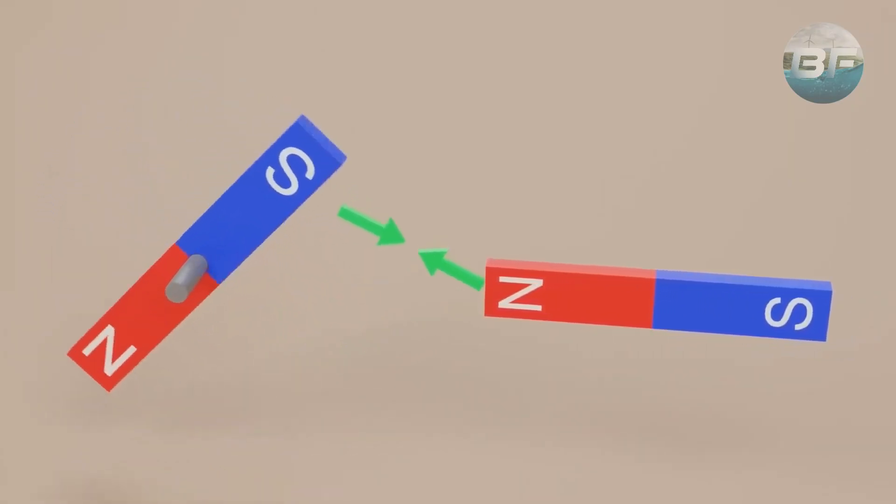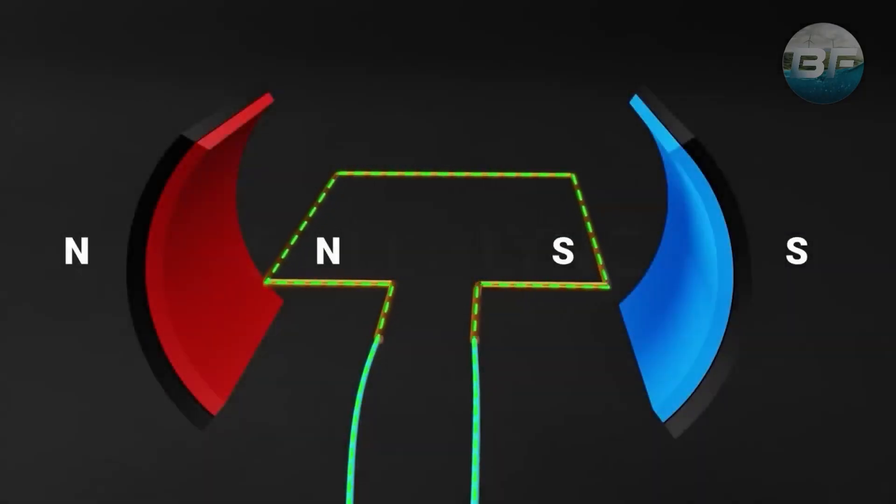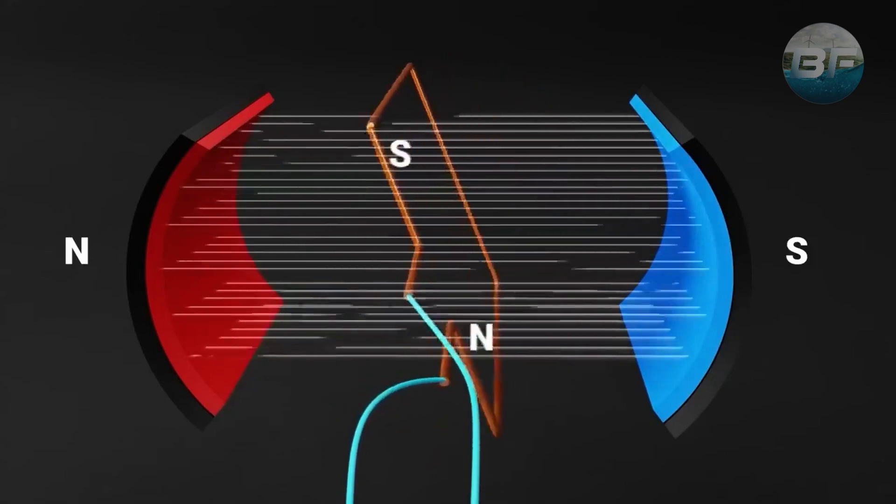Electric motors are based on the principles of electromagnetism, which states that a current carrying conductor placed in a magnetic field experiences a force that causes it to move.